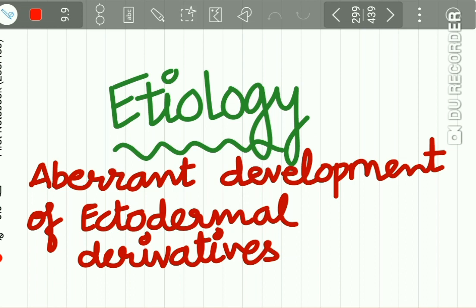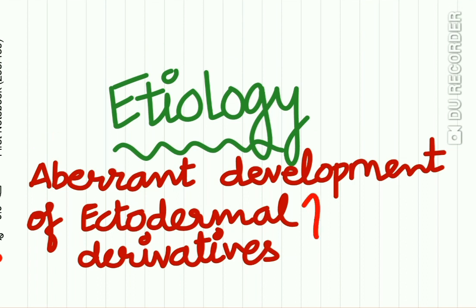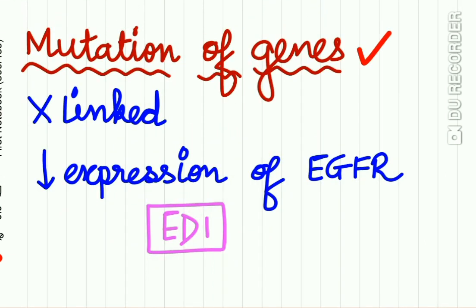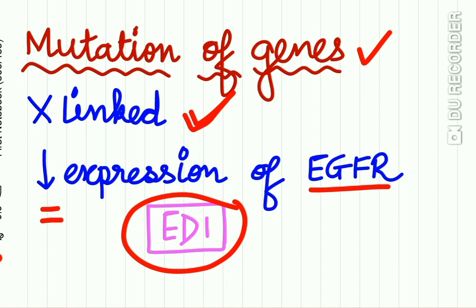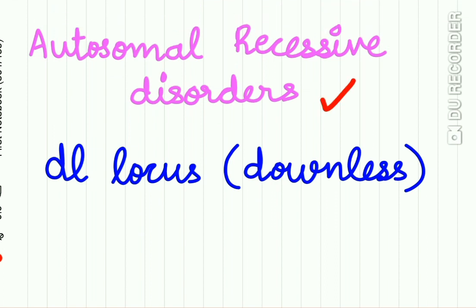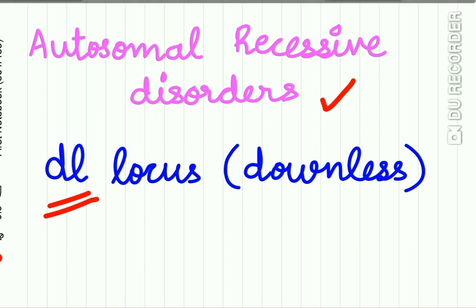The etiology is aberrant development of the ectodermal derivatives due to gene mutations. The X-linked hypohydrotic ectodermal dysplasia is the most common form, in which there is reduced expression of EGFR (epidermal growth factor receptor), and the gene that is mutated is ED1. Autosomal recessive disorders phenotypically indistinguishable from X-linked forms also exist, and the candidate gene for the autosomal recessive kind is the downless locus.